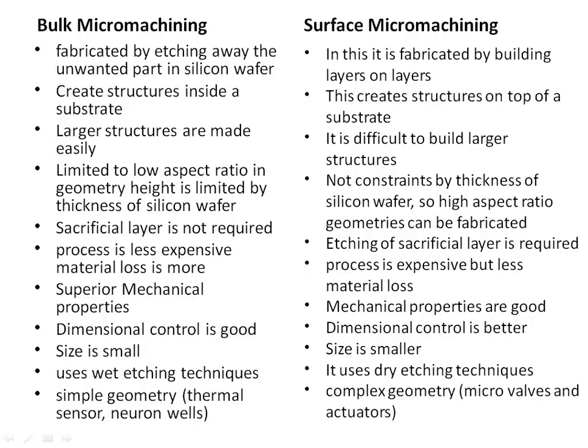Bulk micromachining: Fabricated by etching away the unwanted part in a silicon wafer. Creates structures inside a substrate; larger structures are made easily. Limited to low aspect ratio geometry — height is limited by thickness of silicon wafer. Sacrificial layer is not required; process is less expensive but material loss is more. Superior mechanical properties; dimensional control is good. Size is small. Uses wet etching techniques. Applications include simple geometry, thermal sensors, and neuron wells.